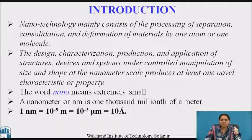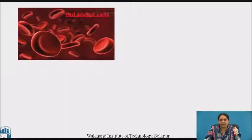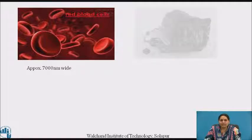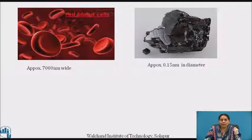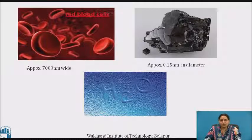The word nano means extremely small. A nanometer is one thousand millionth of a meter. Atoms are extremely small, and the diameter of a single atom can vary from 0.1 to 0.5 nanometers depending upon the type of element. For example, a red blood cell is approximately 7,000 nanometers wide, one carbon atom is approximately 0.15 nanometers in diameter, and a water molecule is almost 0.3 nanometers across.